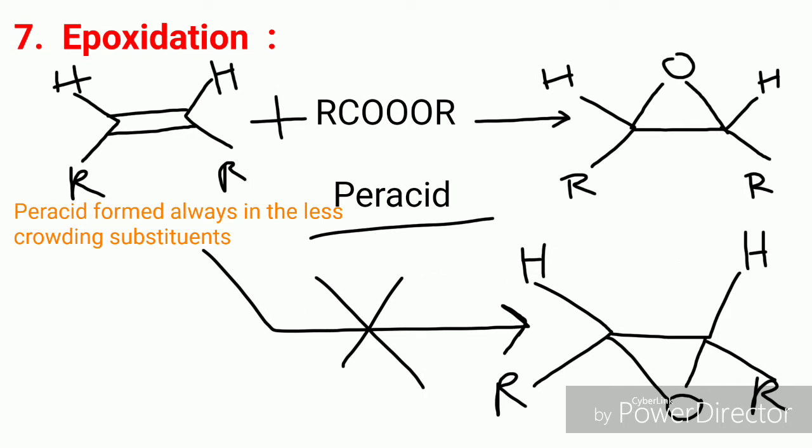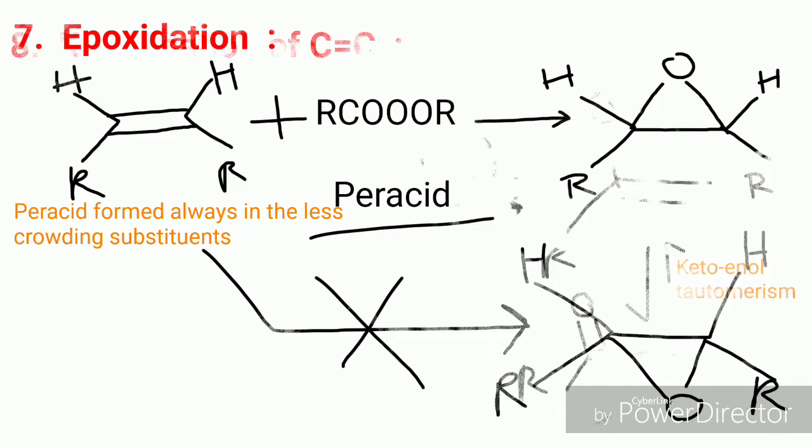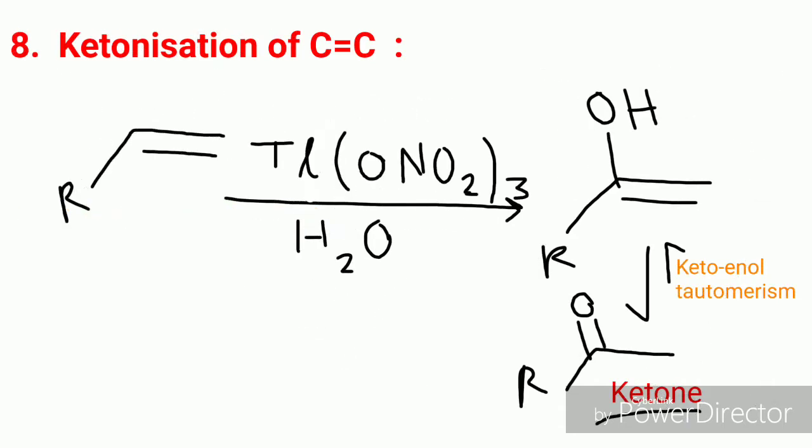The seventh is epoxidation. In epoxidation, an epoxide is formed from an alkene. Alkene on treatment with any peracid gives an epoxide, with the oxygen added from the less crowded side of the double bond.